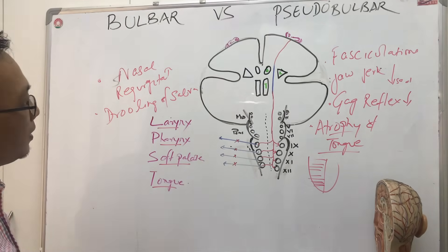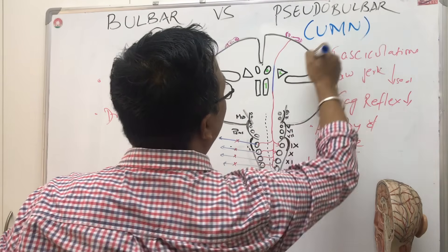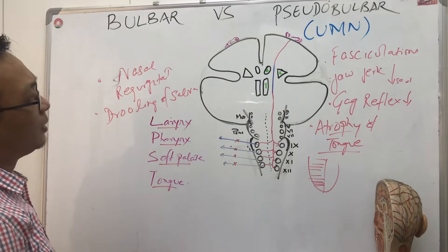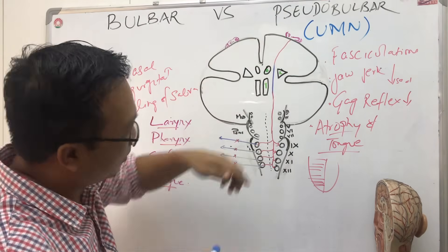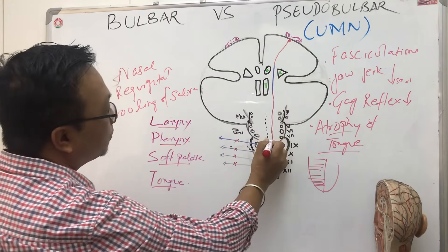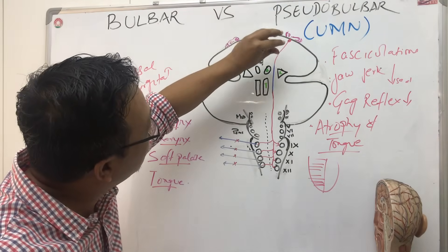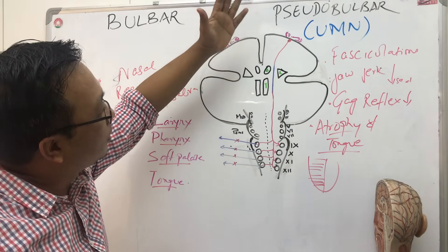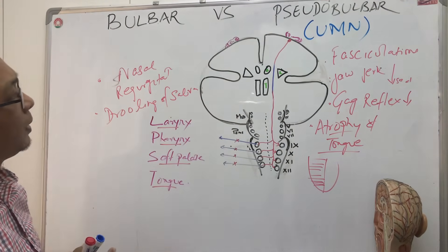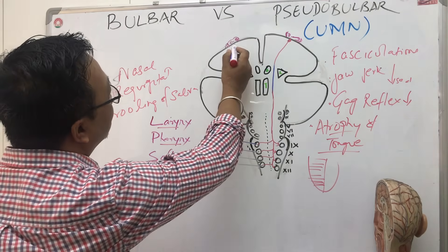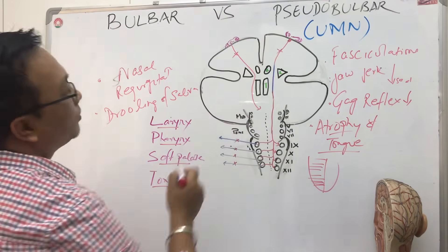Now let's move to pseudobulbar palsy. Pseudobulbar palsy is an upper motor neuron paralysis, and it mostly involves bilateral involvement. It involves the corticobulbar tract — the upper motor neuron portion. There may be a stroke here, a tumor, a head injury, or some sort of progressive lesion. Pseudobulbar palsy most of the time involves both sides of the corticobulbar tract bilaterally.